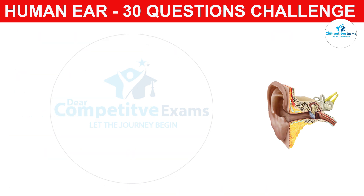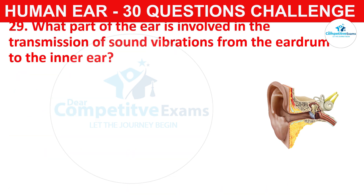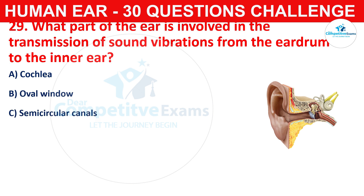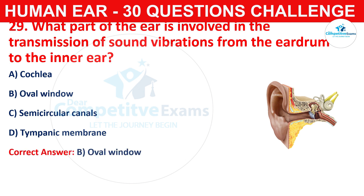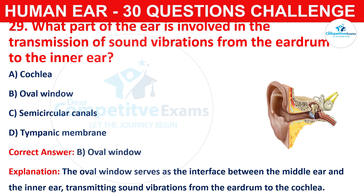Question number twenty-nine: what part of the ear is involved in the transmission of sound vibrations from the eardrum to the inner ear? Your options are cochlea, oval window, semicircular canals, or tympanic membrane. The correct answer is B, that is oval window. The oval window serves as the interface between the middle ear and inner ear, transmitting sound vibrations from the eardrum to the cochlea.